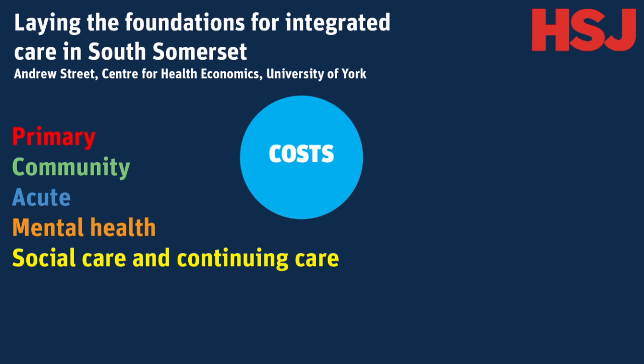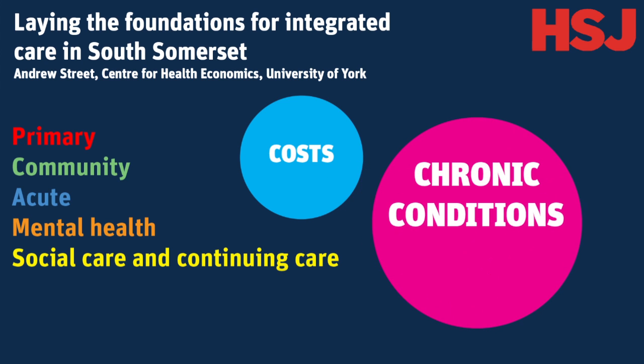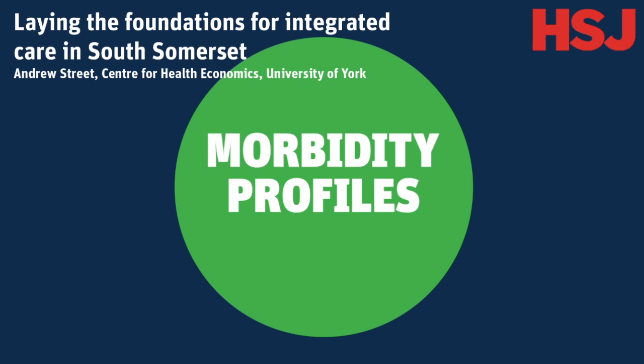As well as demographic characteristics, the data also contain information about the chronic conditions that each person has. This makes it possible to construct morbidity profiles for each member of the population. Our analysis shows that if someone has a chronic condition, they usually have more than one — multimorbidity is the norm, not the exception.